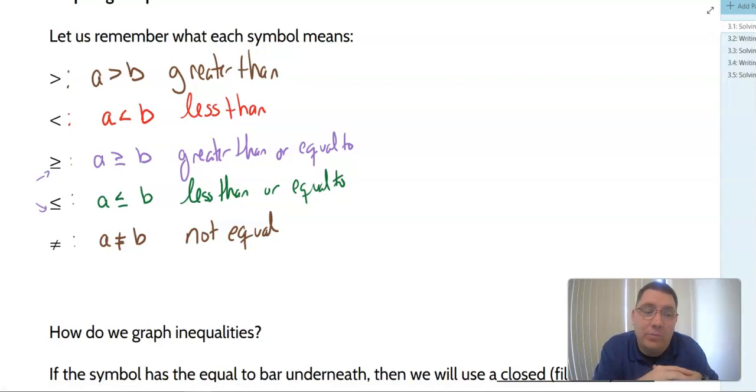What that means is that the value of A could be anything other than the value of B. We'll see how that's graphed in a minute in one of the examples. So we've got a couple of examples — we'll look at how to graph them and how to solve them.